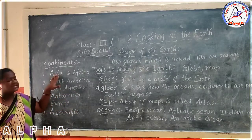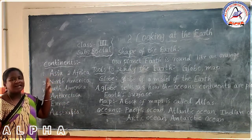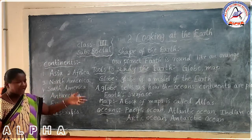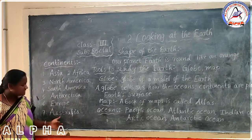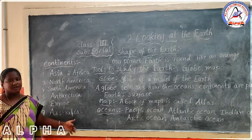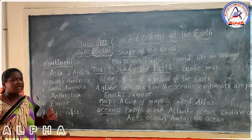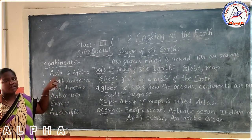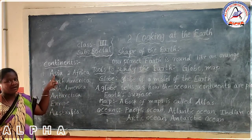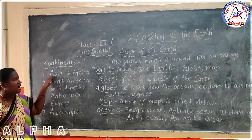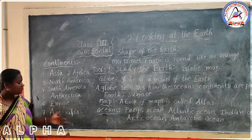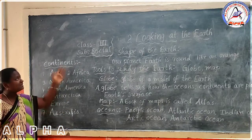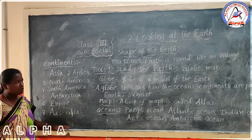Among these, Asia is the largest continent, and the smallest continent is Australia. Population-wise also, Asia is the largest continent. These are the seven continents.